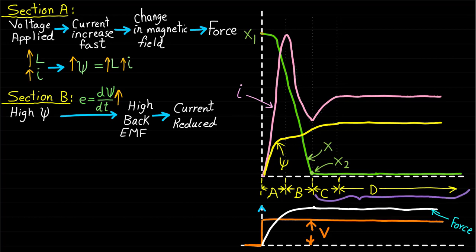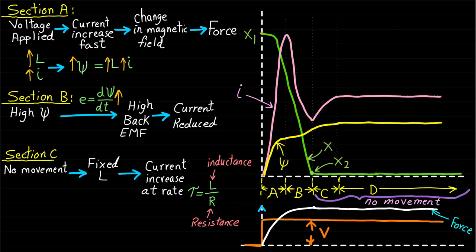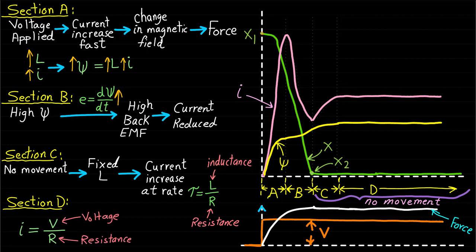In response to all these changes in current and magnetic flux linkage psi, the moving part reaches the distance x equals x2 and stops moving. At this point, there is no change in the inductance, and therefore the current will increase at a certain time constant tau equal to L over R, as shown in section C. Once the current settles down, it will remain constant and equal to I equals V over R, as represented by section D, which can also be called the steady state period.